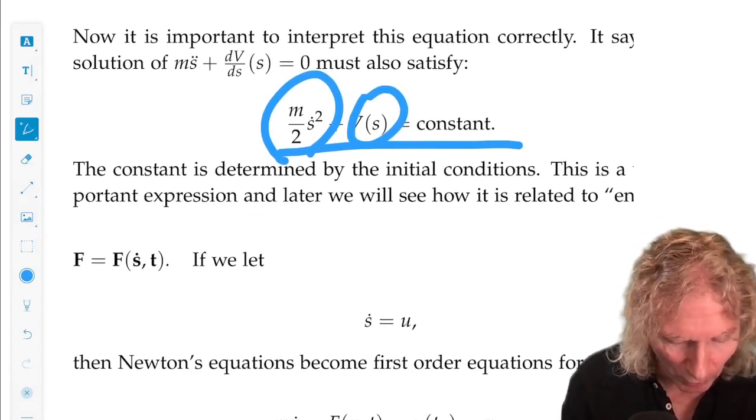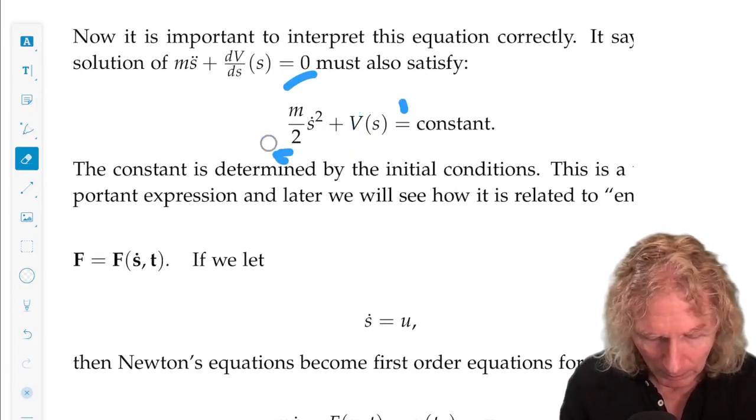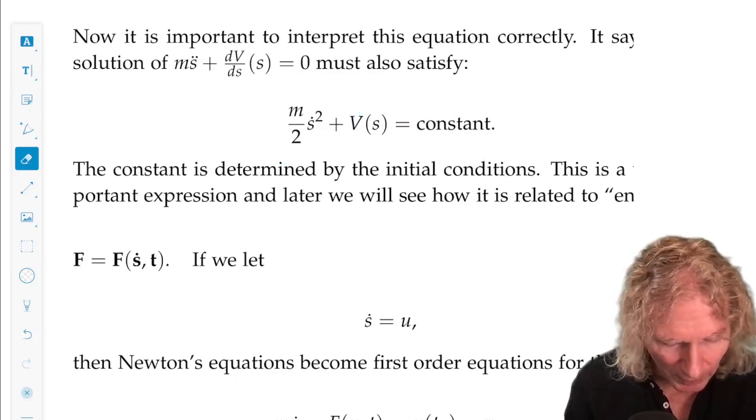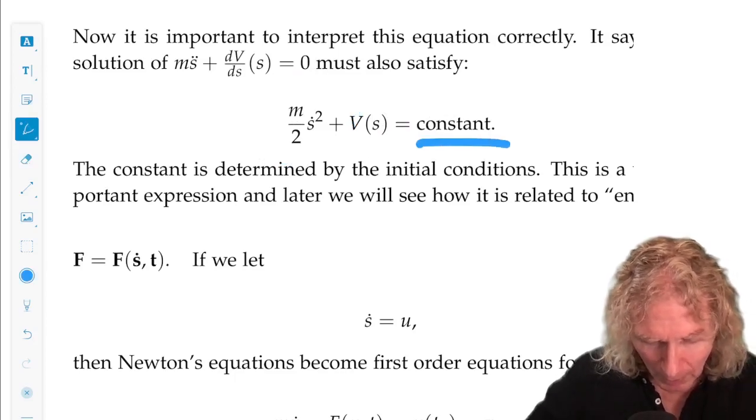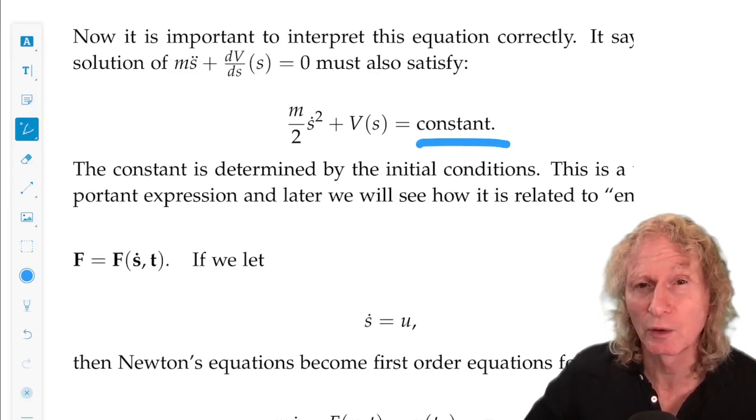How does this help us solve? If we fix this constant, we have, we can solve for ṡ², and we can solve for ṡ = ds/dt,